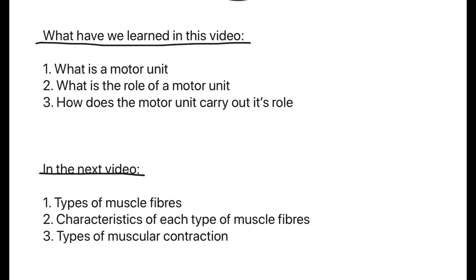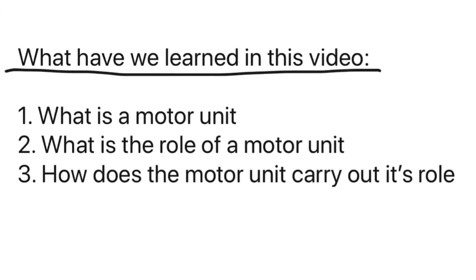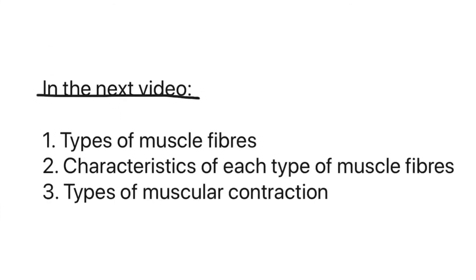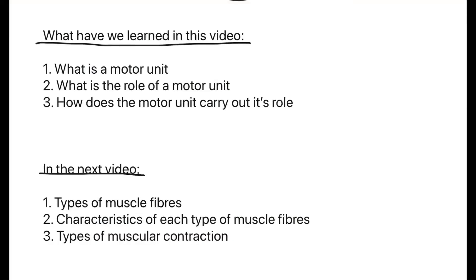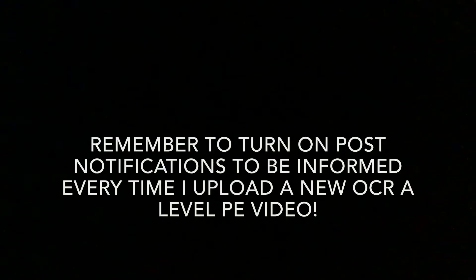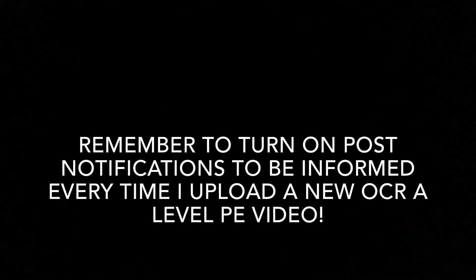Thank you all for watching. Just a reminder of what we have learned in this video: what a motor unit is, what is the role of a motor unit, and how the motor unit carries out its role. In the next video we will be looking at the types of muscle fibres, the characteristics of each type, and different types of muscular contraction — things like isometric, isotonic-concentric, and isotonic-eccentric. Please hit the subscribe button if you haven't already and share this channel with your friends studying A-level PE. Thank you very much.